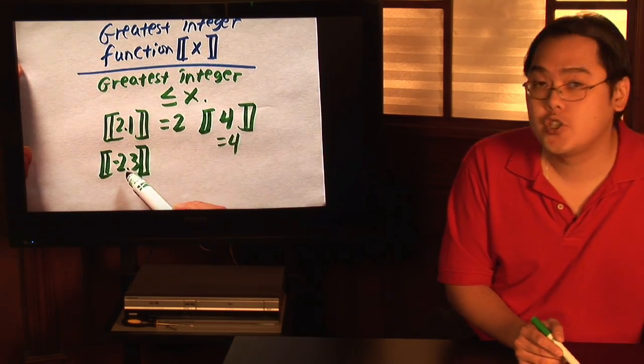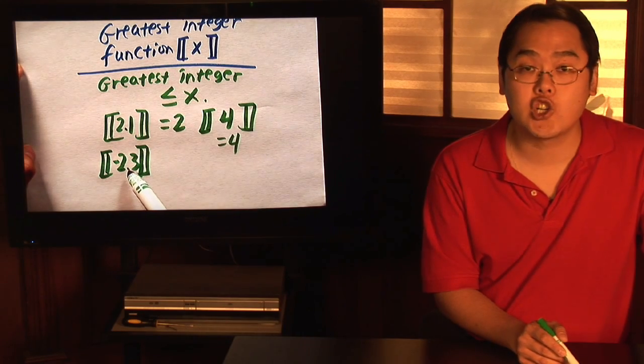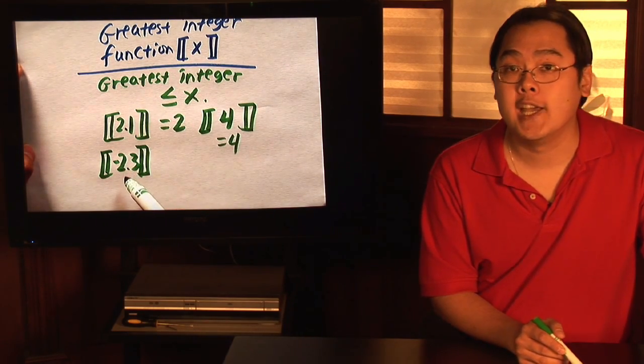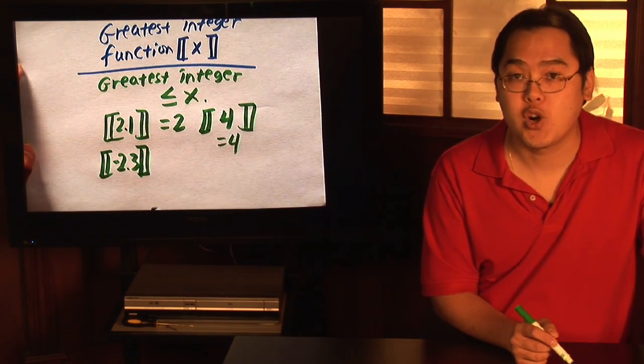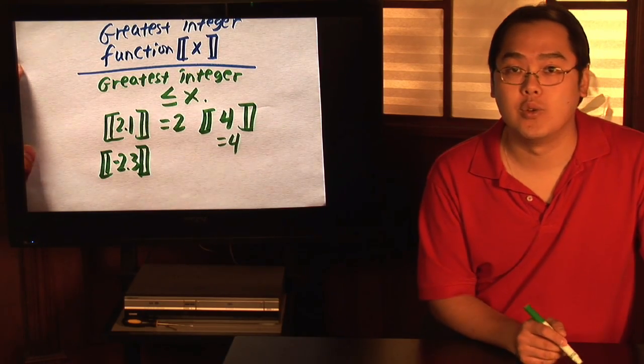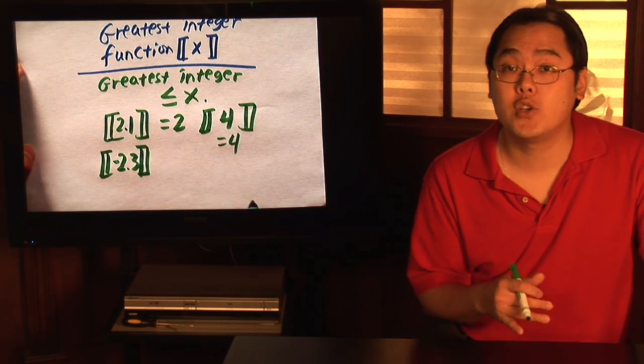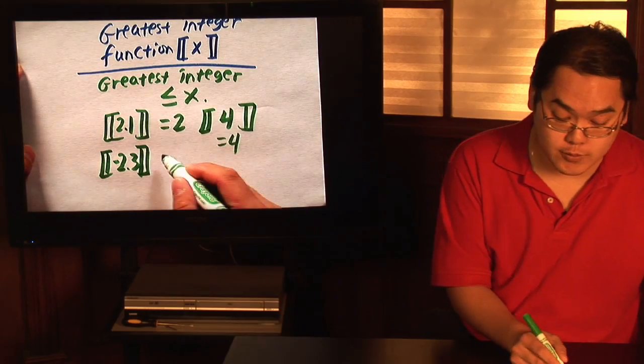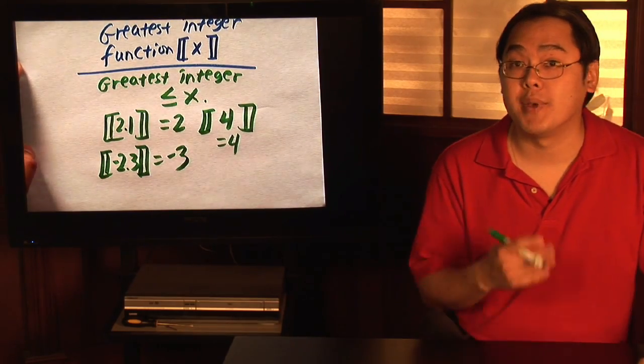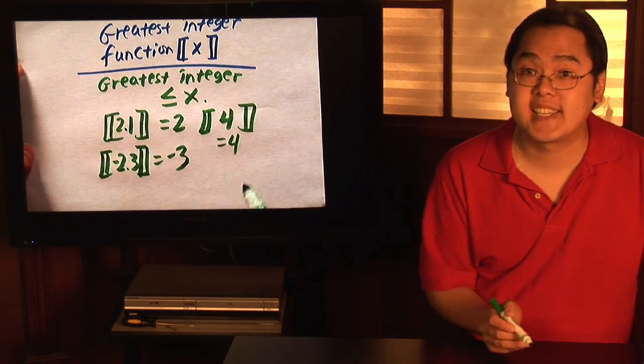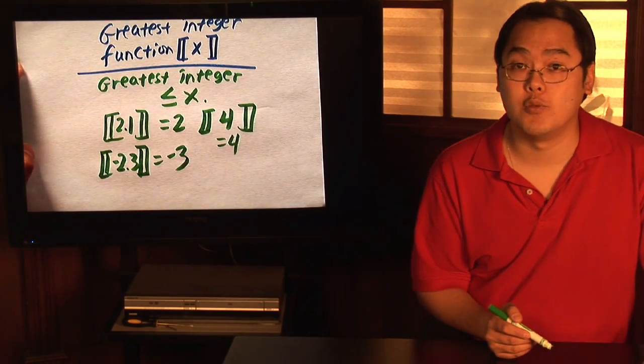If you think about negative 2, though, negative 2 is actually larger than negative 2.3. You're looking for the greatest whole number that's less than or equal to negative 2.3. Negative 2 is actually too large, so you have to go with negative 3 because that is the greatest integer less than or equal to negative 2.3.